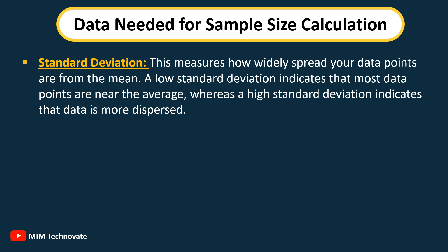Standard deviation: this measures how widely spread your data points are from the mean. A low standard deviation indicates that most data points are near the average, whereas a high standard deviation indicates that data is more dispersed.